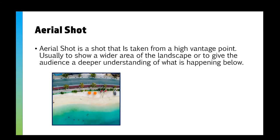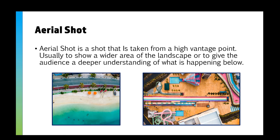An aerial shot is taken from a high vantage point, usually to show a wide area of landscape or to give a deeper understanding of what's happening below. For example, in Harry Potter's Goblet of Fire, Harry goes into the maze and then it zooms out to an aerial shot which shows how large that maze actually is. All that does is show the audience how huge the maze is, giving a deeper understanding of how difficult the last trial is going to be.